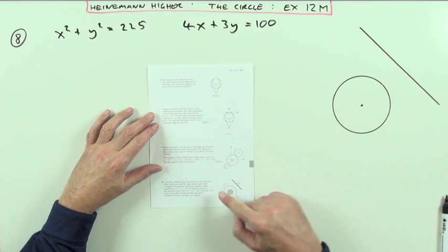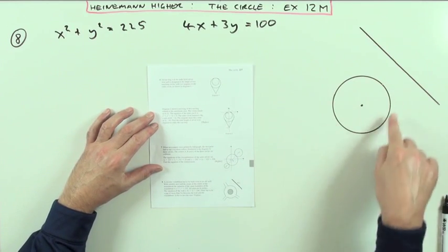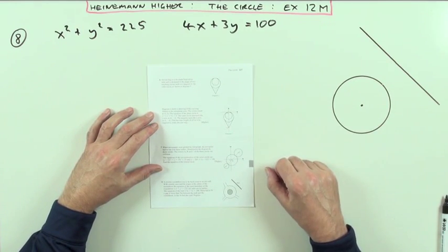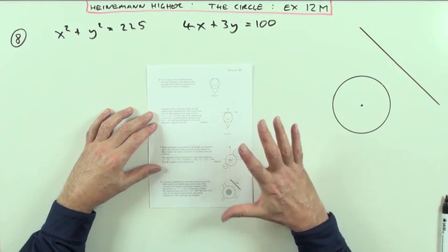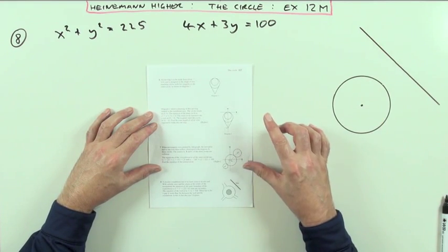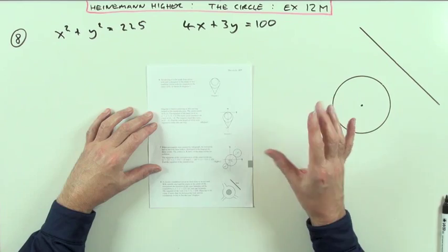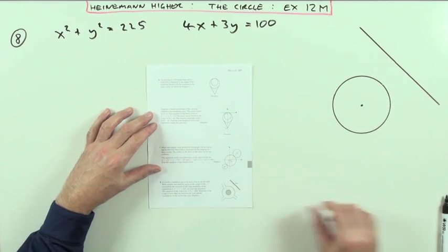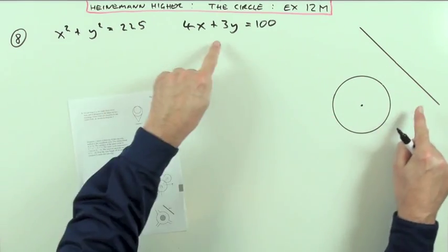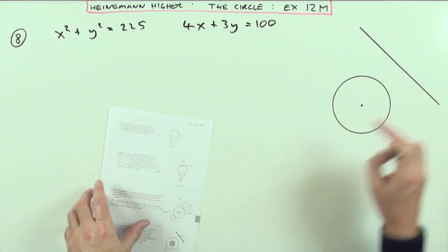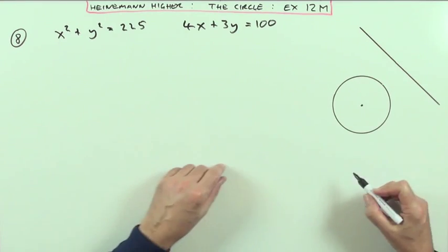Number 8, a worded question. The significant parts are: we've got the circle representing the outside of the roundabout and the line representing a wall. It says there has to be a gap of more than 5 meters, and it gives the equation of the circle and the equation of the wall.